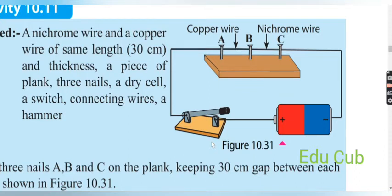Fix the three nails A, B, and C on the plank, keeping a 30-centimeter gap between each other. Tie the copper wire between nails A and B, and the nichrome wire between nails B and C. Both wires should be well stretched. Then connect nails A and C of the plank to the switch and dry cell with connecting wires.